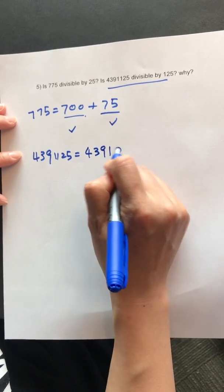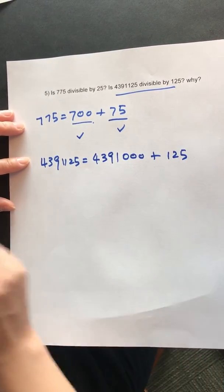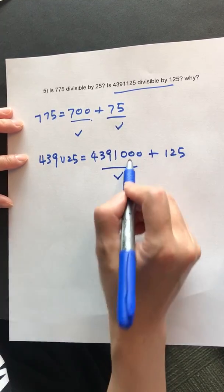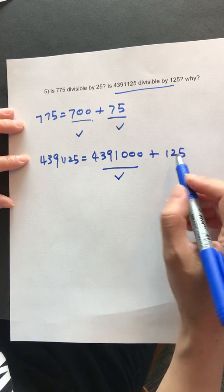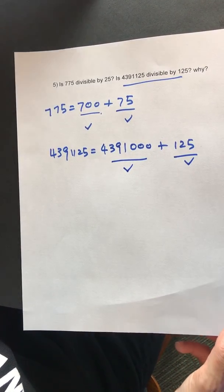We break this down into 4,391,000 plus 125. This can be divided by 125—every 1,000 can be divided by 125. And 125 can be divided by 125. So the total number can be divided by 125.